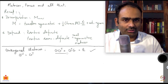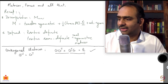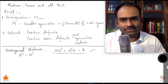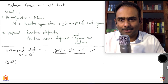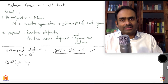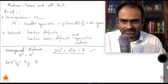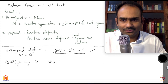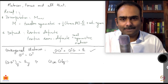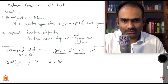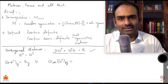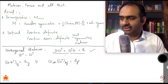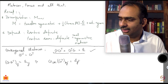I want to write down this definition of an orthogonal matrix using indices. Let us take O times O transpose equals identity and look at the element ij. It becomes O_ik times (O transpose)_kj, and the element kj of the transpose matrix gives delta_ij, because that is what your identity matrix is.